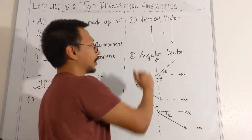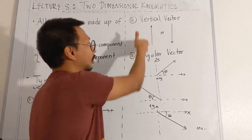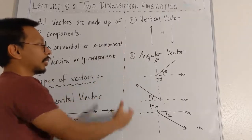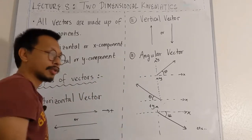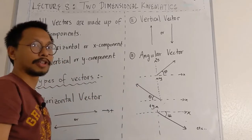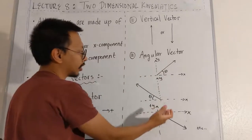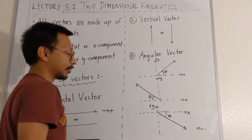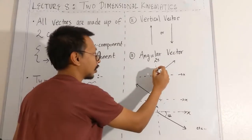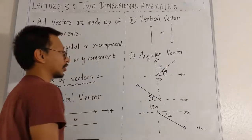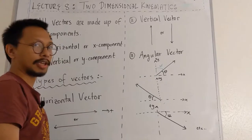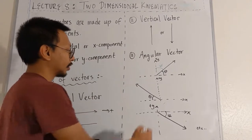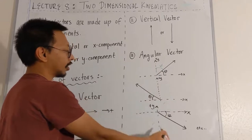Secondly, we have vertical vectors. Vertical vectors are along the vertical directions, so they can either go up or down. The most important thing about two-dimensional kinematics is we get to work with angular vectors, so we have to familiarize ourselves with angular vectors very well. Angular vectors may form an angle theta with the x-axis, or they can also form an angle phi with the y-axis. Whichever one you are given, you work with that — it just means you have a different triangle to work with.